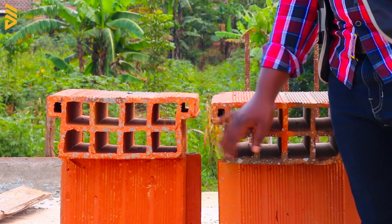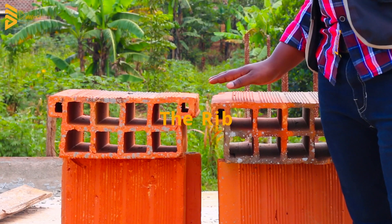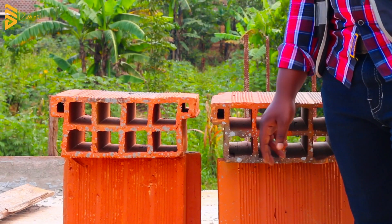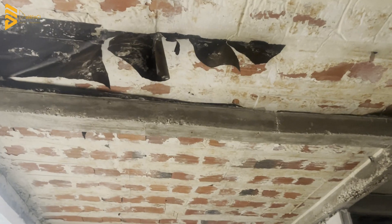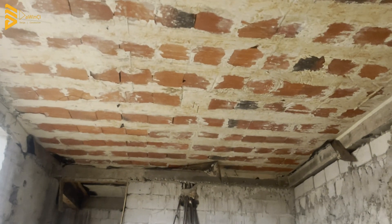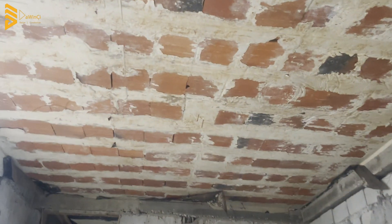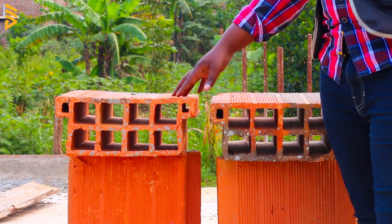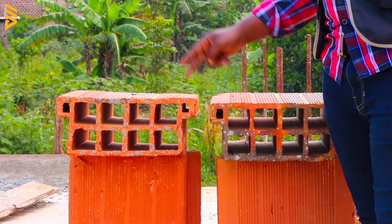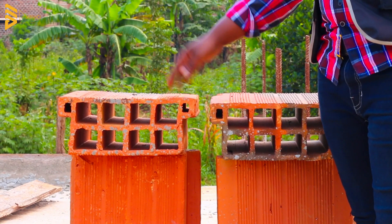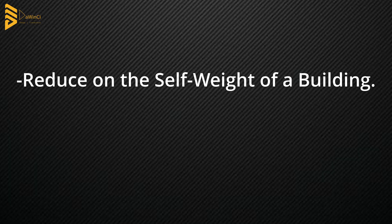That beam is called a rib in structural design — it's the rib of the slab. That's why after the timber work is removed you will see this hanging, yet it's not falling because it's held tightly onto the beam by the flanges. To understand the function of max pans: first of all, they reduce the self-weight of the building.